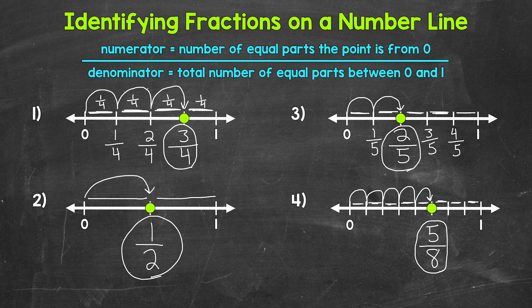Let's label the rest of the number line. We start with zero eighths, then one eighth, two eighths, three eighths, four eighths, five eighths, six eighths, seven eighths, and then eight eighths is one whole.